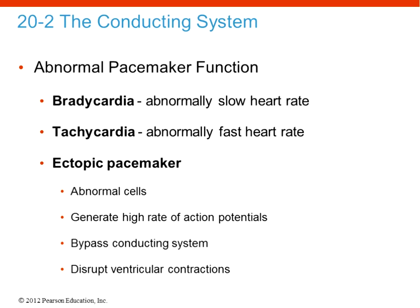If there are issues with the SA node or pacemaker, we use specific terms. Bradycardia is an abnormally slow heart rate; tachycardia is an abnormally fast heart rate. An ectopic pacemaker means those pacemaker cells are abnormal, generating more action potentials than normal and manifesting as tachycardia, sometimes bypassing the conducting system so the ventricles don't contract at the right time. When the atria or ventricles are quivering rather than properly contracting and relaxing, we call that fibrillation — this is a problem because it prevents blood from being effectively pumped to the pulmonary or systemic circuit.